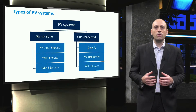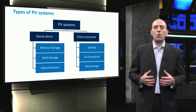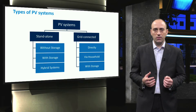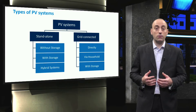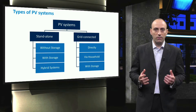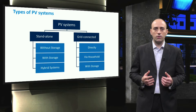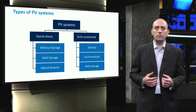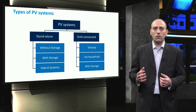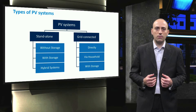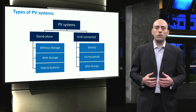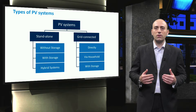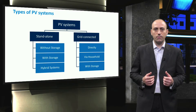Basically, depending on the application, we have to use these components to design and build a complete PV system. There are different types of PV systems, of course. They can be classified into stand-alone PV systems and grid-connected PV systems. Each of those categories might be further divided into several sub-categories.